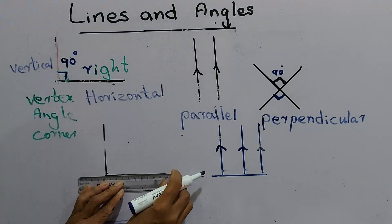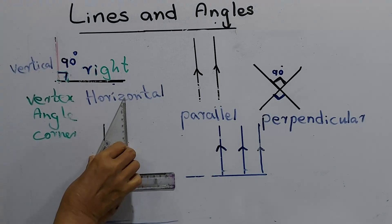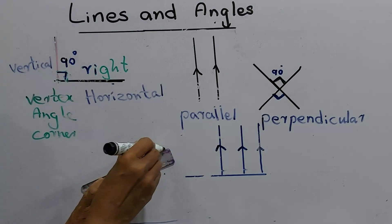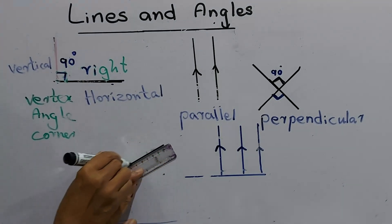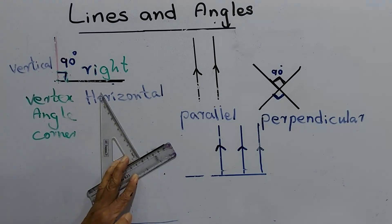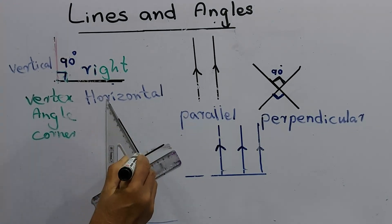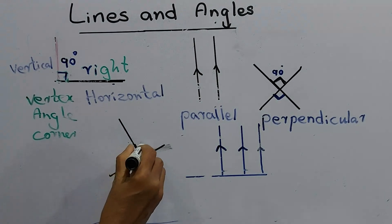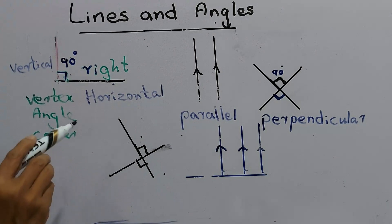To draw a perpendicular line, draw a line first, then keep the set square on the line. You can draw a slant line if needed and then place the set square on the line. That's the way we draw a perpendicular line. The corner is 90 degrees — when these two lines meet together it makes a right angle.